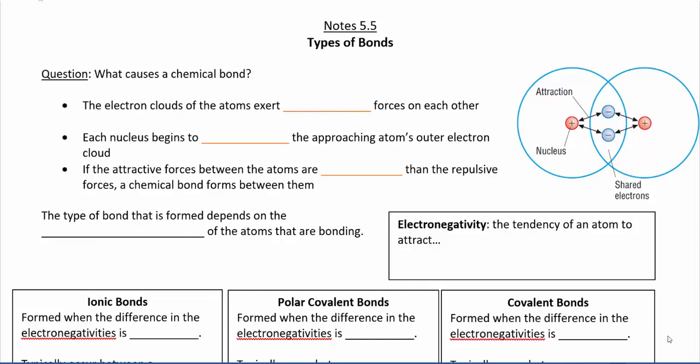Welcome back everybody to our next chemistry lesson. Today we're going to be talking about different types of bonds. You already know about the two main types we talked about: ionic and covalent bonds. But it turns out we've actually been glossing over the fact that in reality there's a third type of bond that sits sort of in between those two extremes.